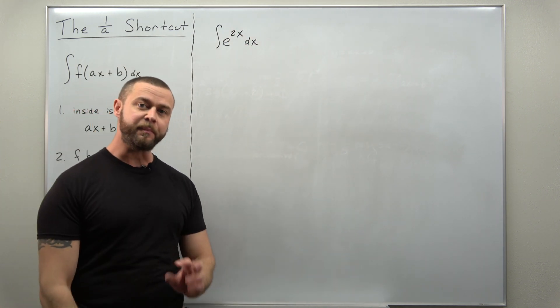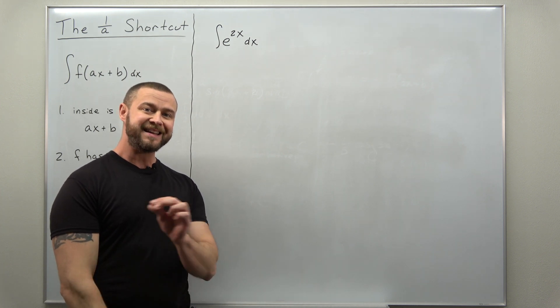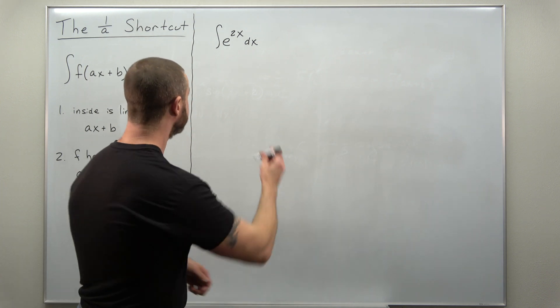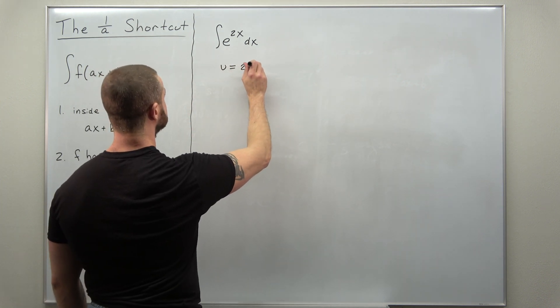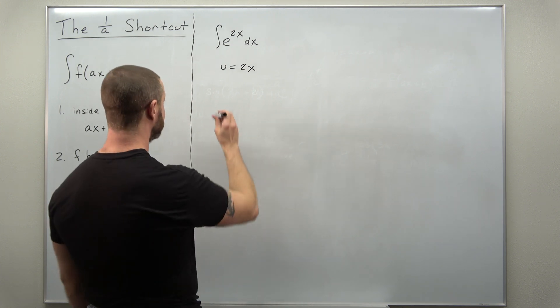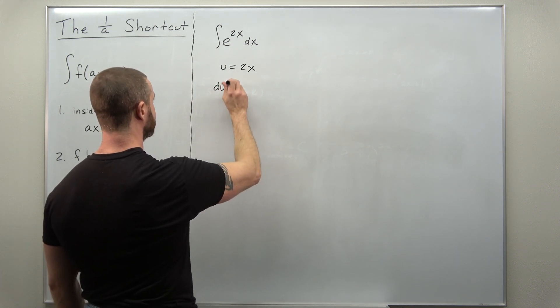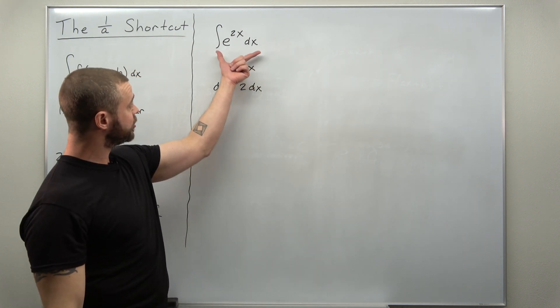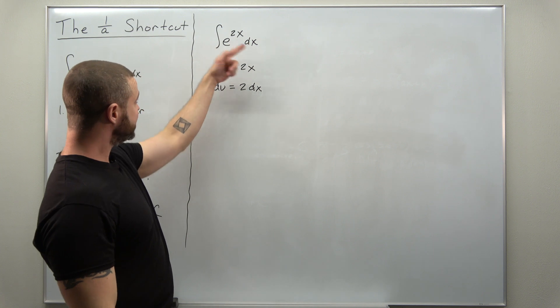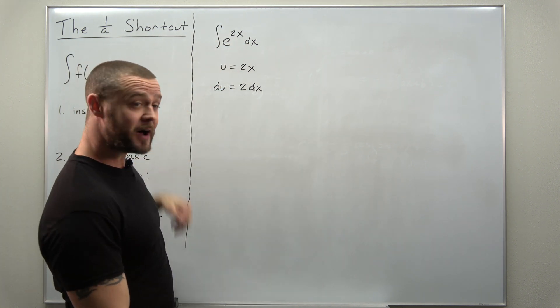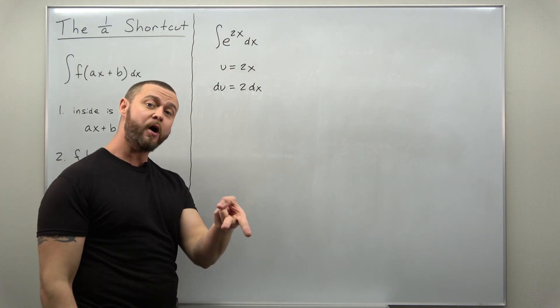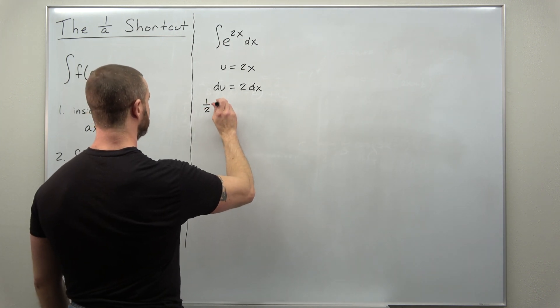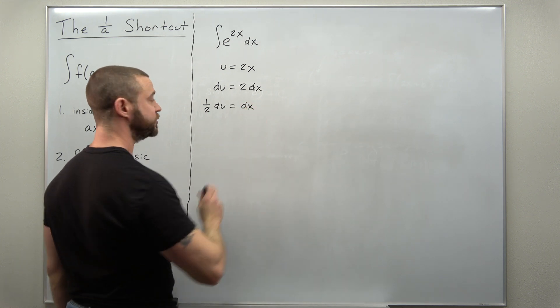All right, the integral we'll start with is a basic exponential integral e to the 2x. So we can tackle this with a straightforward substitution. Let's go with u equals 2x. We calculate the differential and in order to properly convert your integral from x to u's we're missing a factor of 2 so we can divide this over where we're going to get 1 over 2 du equals dx.